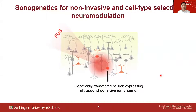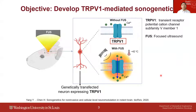So when ultrasound is applied, only the transfected neurons will be activated, while the surrounding wild-type neurons will not be affected. The existing sonogenetics technologies are all based on mechanosensitive ion channels, harnessing the mechanical effect of ultrasound.